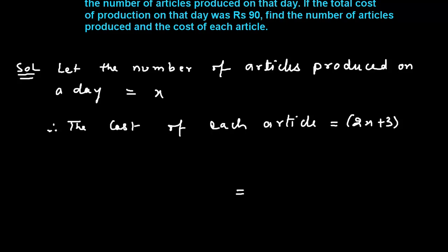If we multiply the number of articles produced on that day by the cost of an article, then we shall have the total cost: x into 2x plus 3.